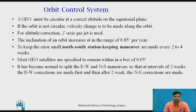For the orbit control system, a geostationary orbit must be circular at the correct altitude on the equatorial plane. If the orbit is not circular, velocity changes must be made along the orbit. For altitude correction, z-axis gas jets are used. The inclination of an orbit increases about 0.85 degrees per year. Most GEO satellites are specified to remain within a box of 0.05 degrees, so in practice corrections called north-south station keeping maneuvers are made every 2 to 4 weeks. It has become normal to split the east-west and north-south maneuvers so that east-west corrections are made first and then, after 2 weeks, the north-south corrections are made.